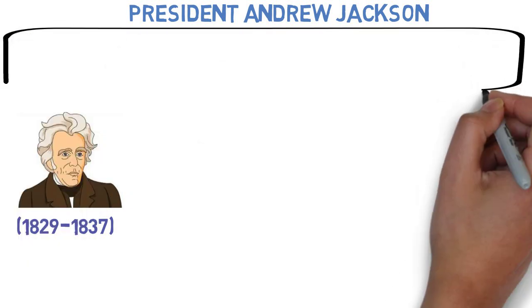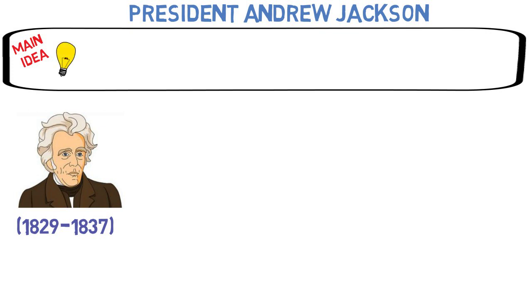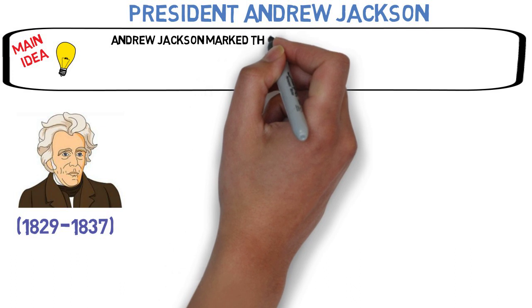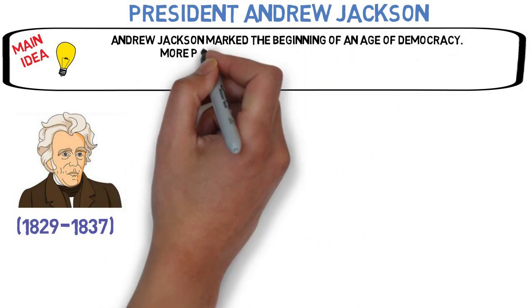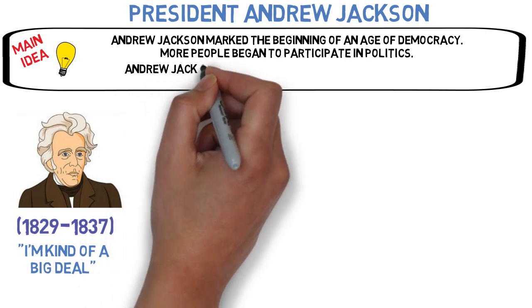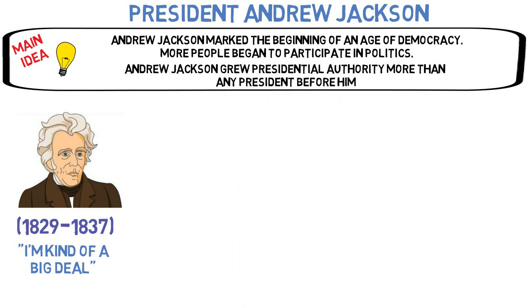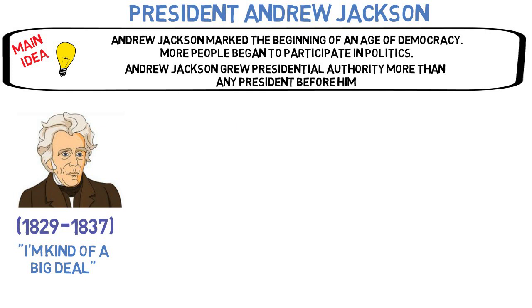Unlike earlier presidents, Andrew Jackson was elected with an expanded electorate. Beginning in the early 1800s, more white men were granted suffrage, or the right to vote. As more states began to ease property-owning requirements for voting, more people began to participate in politics. In 1824, around 355,000 Americans voted in the presidential election. In 1828, more than 1.1 million had cast their vote. Many of these common voters saw Jackson as someone more like them. Jackson used this as his mandate, or justification, to govern how he saw fit, and exercised a greater degree of presidential authority than any president before him.